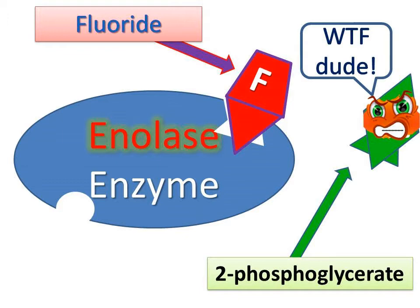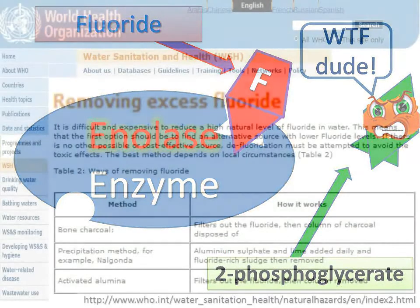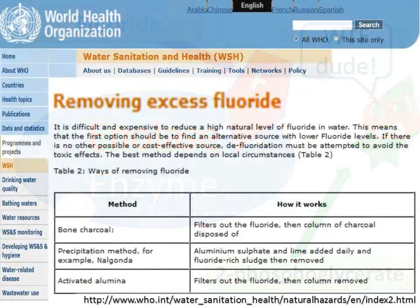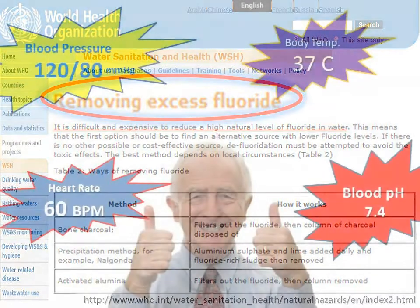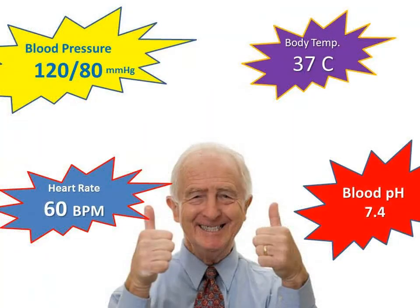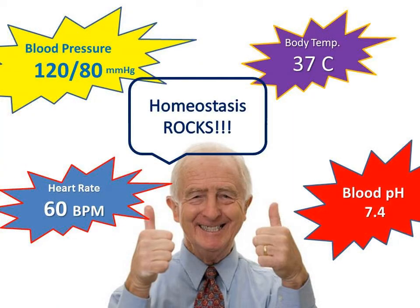Fluoride works best at levels of about one part per million. So fluoridation might actually entail removing naturally occurring fluoride as well as adding fluoride from other sources when natural sources may be deficient. It's all about balance — having enough fluoride to provide the maximum health benefits without risking the adverse effects that may be associated with very high toxic levels.